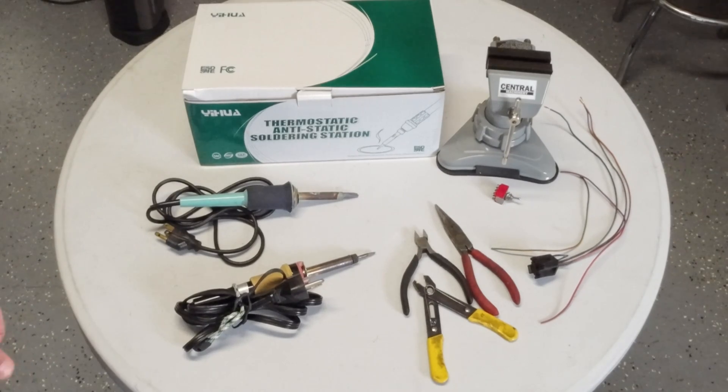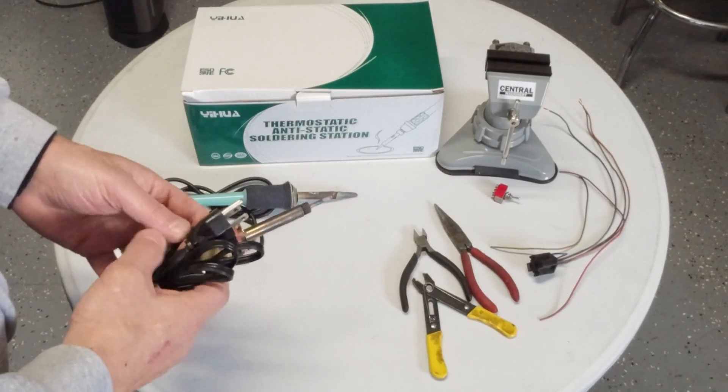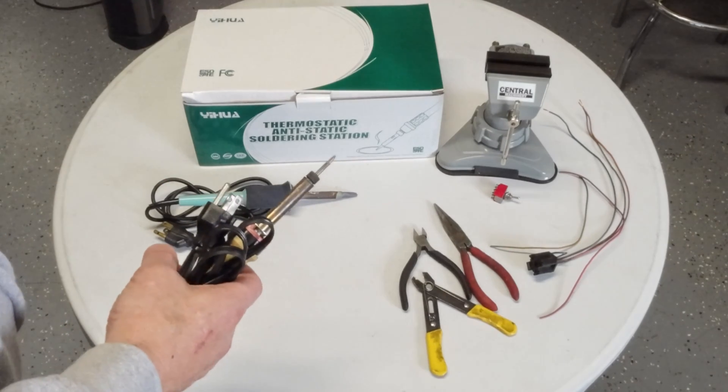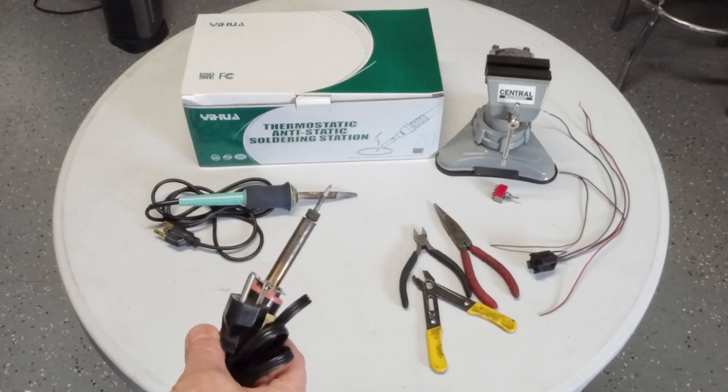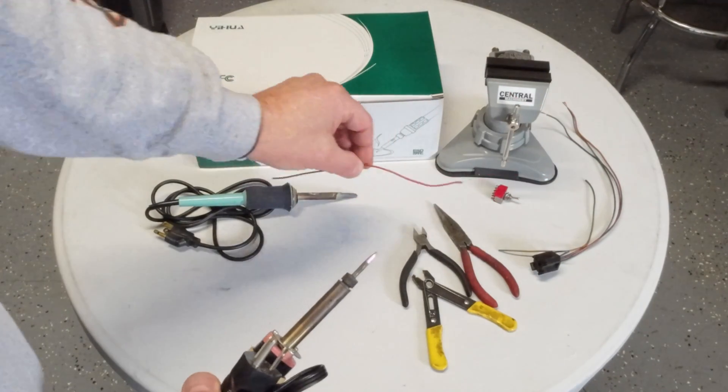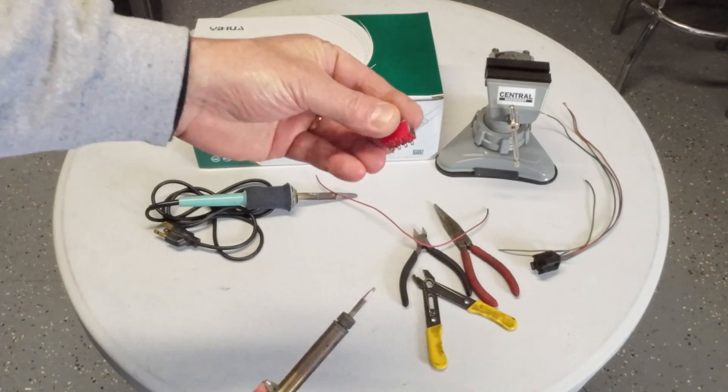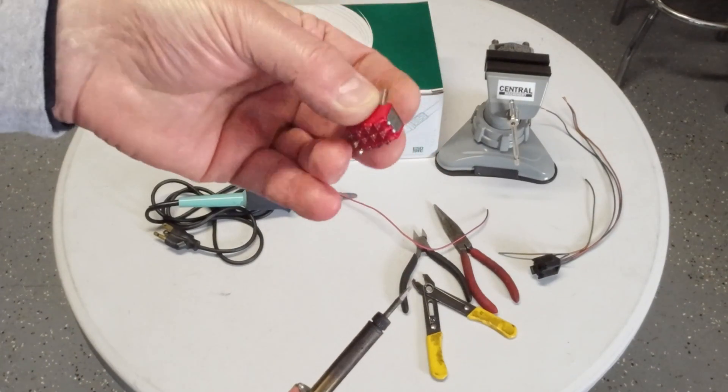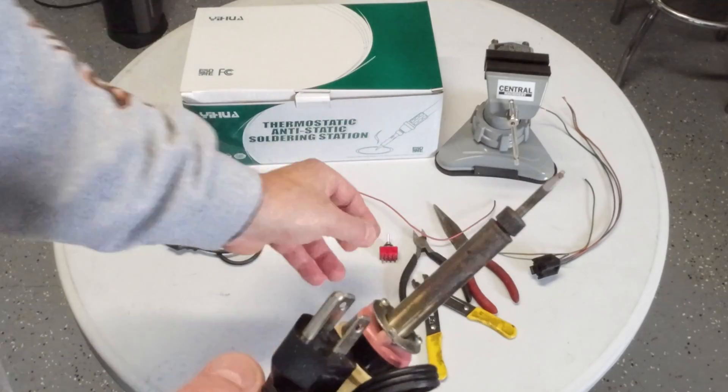You don't really need an elaborate soldering iron if you're just going to be doing something simple, like soldering some wires together or soldering wires to something. This is what I'm going to demonstrate today—we're going to solder some wires to this switch.